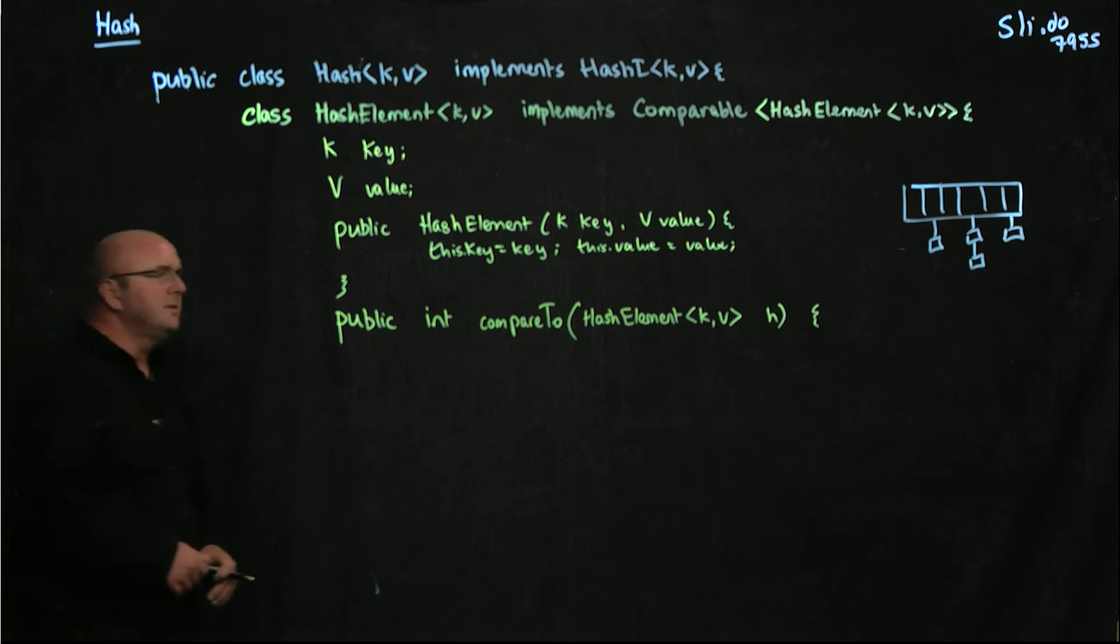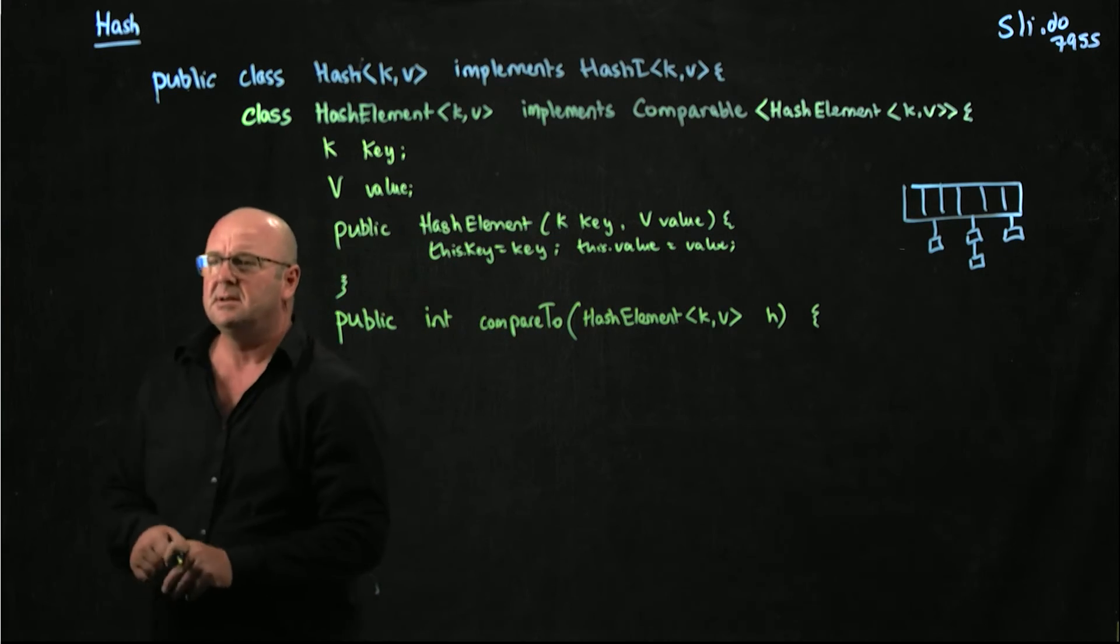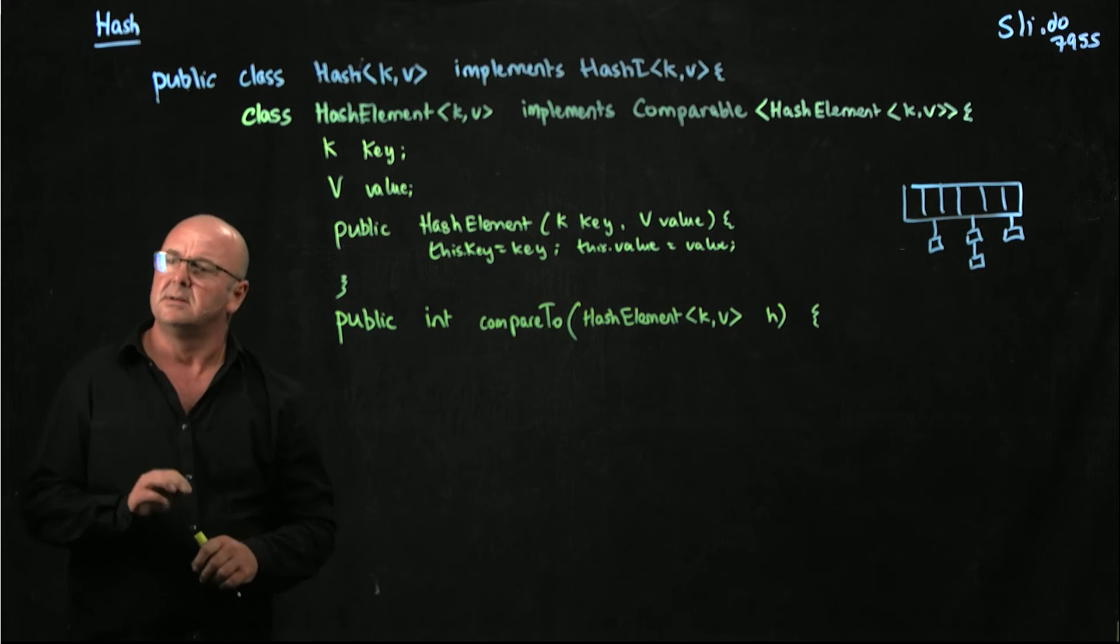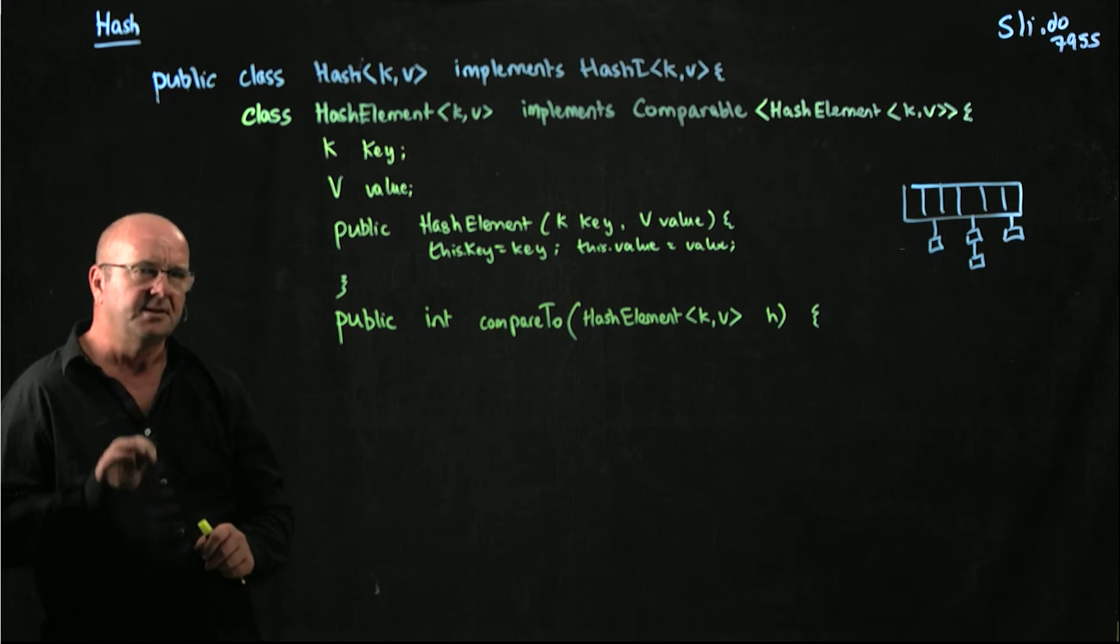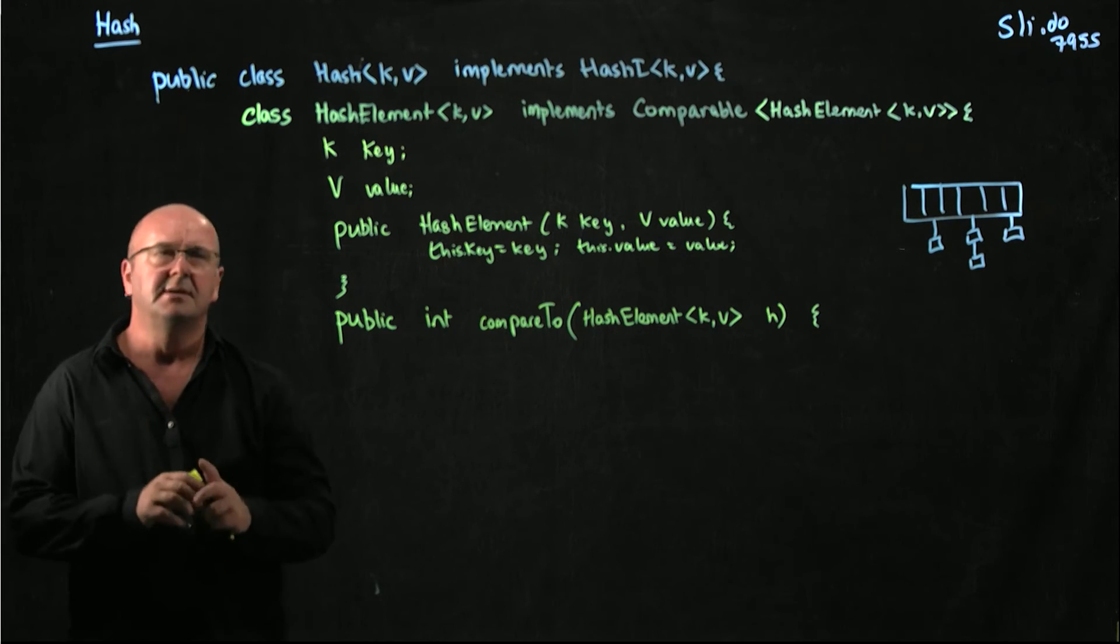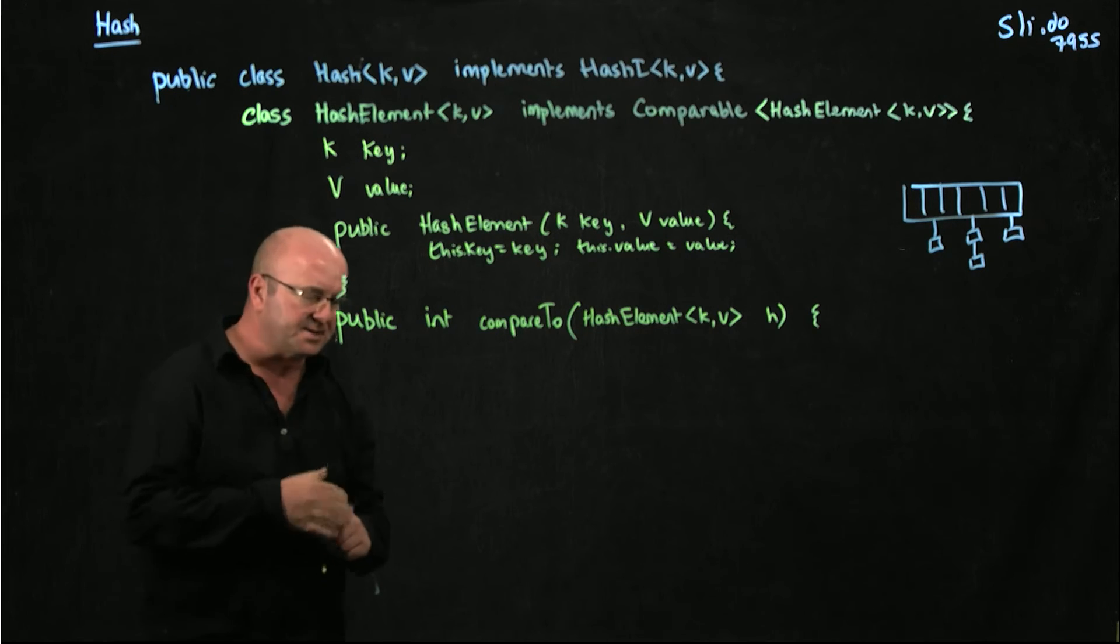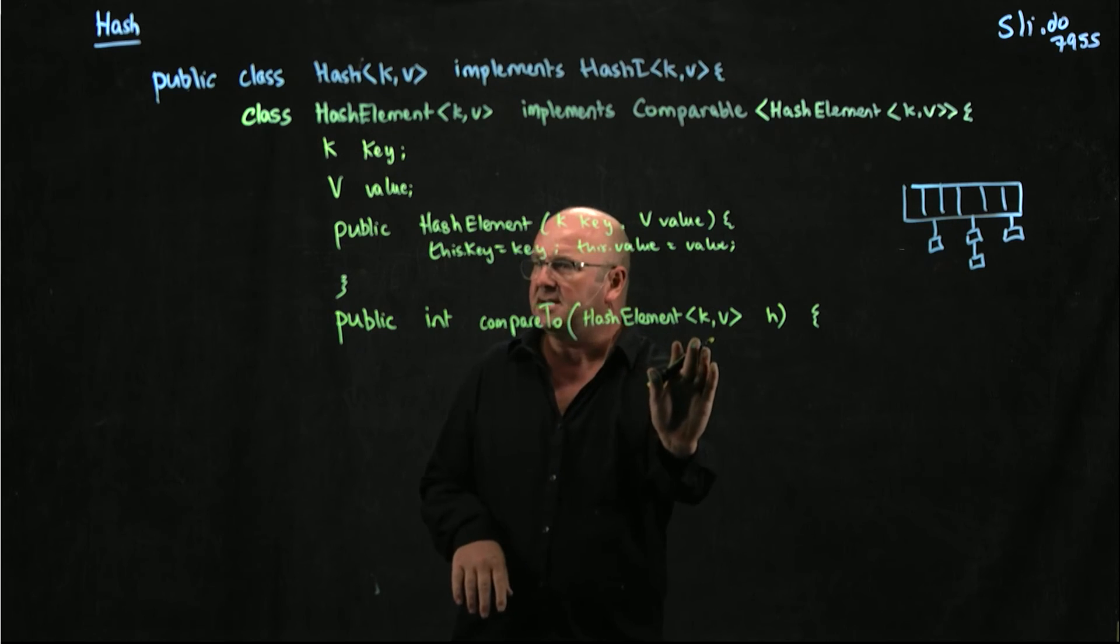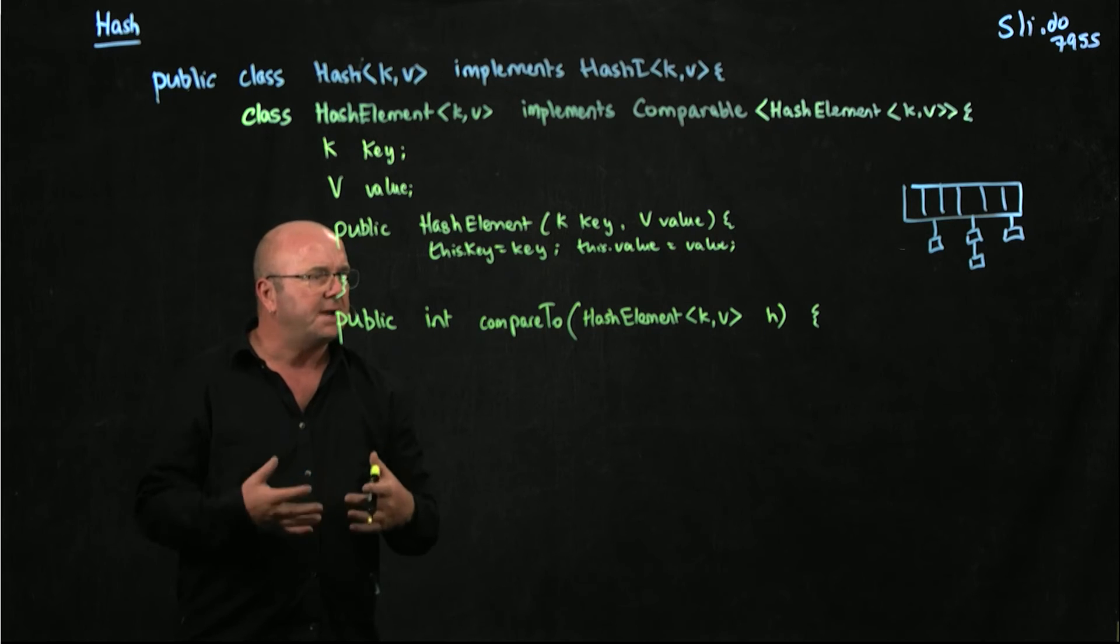If we look in the description of assignment two, it says that we consider two things to be the same if their key is the same, but not if the value is the same. So two things are the same if the key is the same, but not the value. That allows us to change the value associated with a key. So all we really need to do here to decide if two things are the same is to compare their keys.